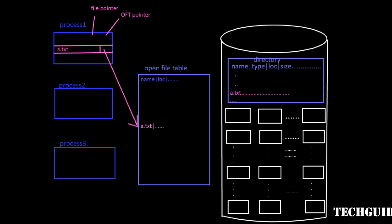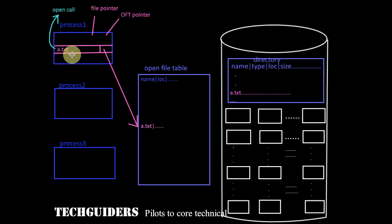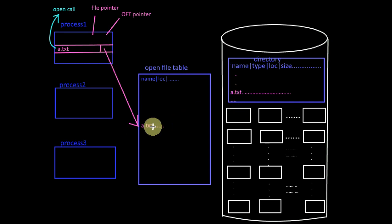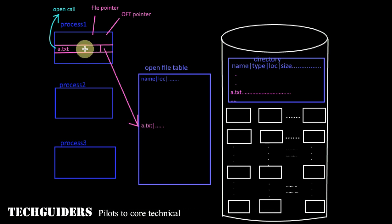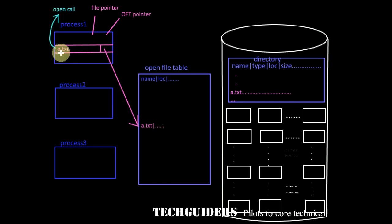The open system call will return a pointer to this per-process table entry. When a file is referred to by a process for the very first time, the directory will be searched and an open file table entry is created. The information about the file is copied to this entry, and a per-process table entry is created with the process-specific information and a pointer to the system-wide open file table. Finally, the open call returns a pointer to this per-process table entry.